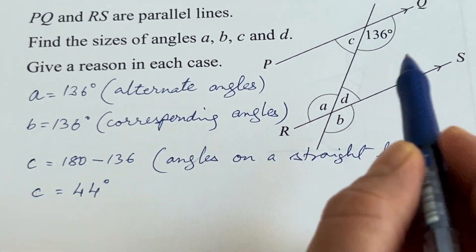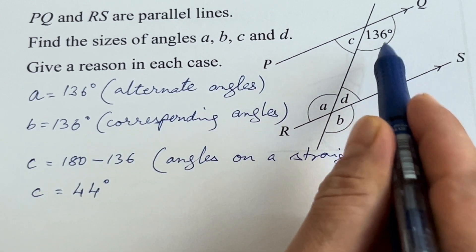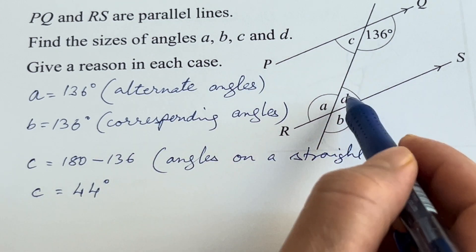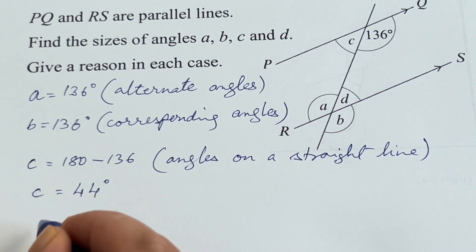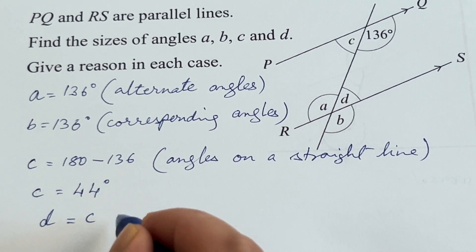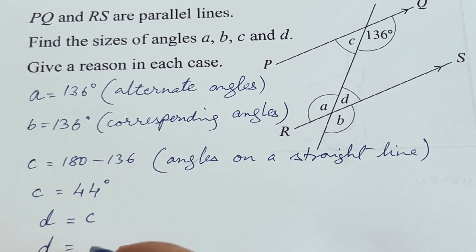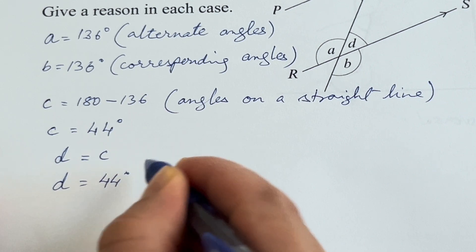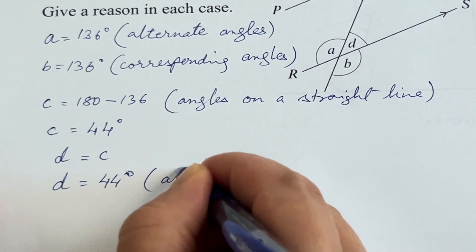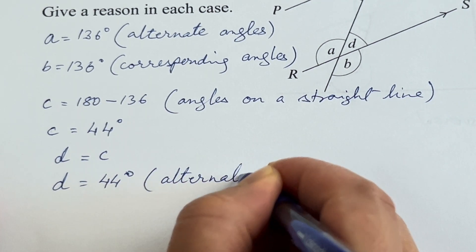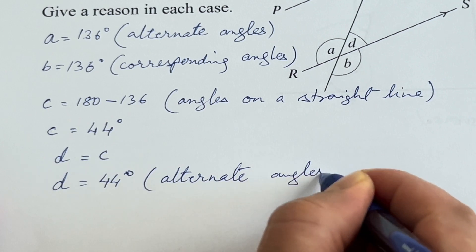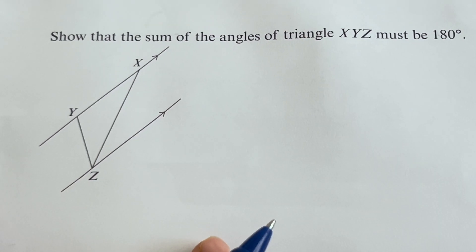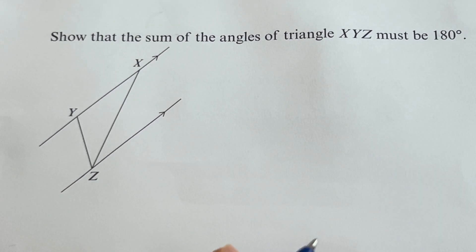For angle D: D and 136 are interior angles, or C and D are alternate angles. So D equals C, which is 44 degrees. The reason is alternate angles are equal. The next question wants us to prove that the sum of the angles of triangle XYZ must be 180 degrees.